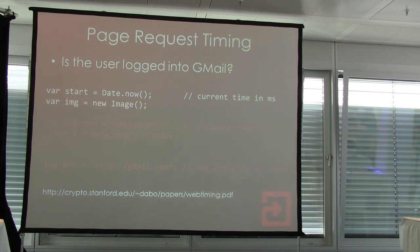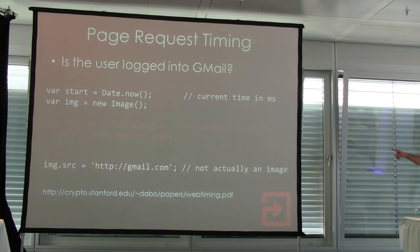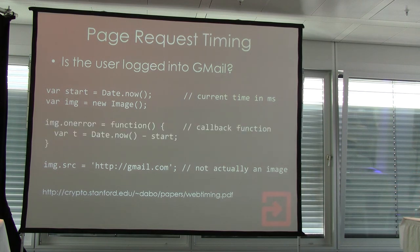An image request is the simplest possible way in JavaScript to fire off an HTTP request to another website. It doesn't matter that our request has nothing to do with an image — in this case we say go and fetch gmail.com. The browser will happily do that. Once it's fetched it, it'll come back and say that's not an image — it's an error. We can use this error callback to take another timestamp, find the difference between the two timestamps, and figure out how long that request took.